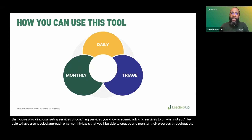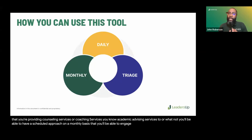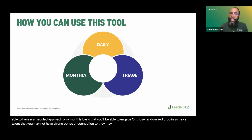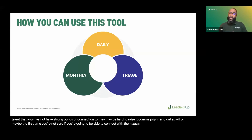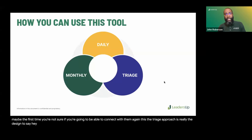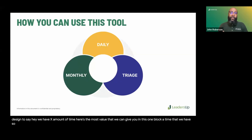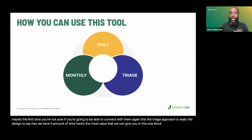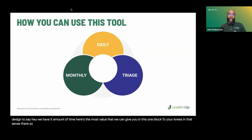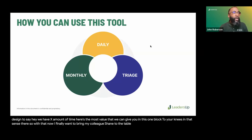You'll be able to have a scheduled approach on a monthly basis to engage and monitor their progress throughout the course of utilizing our tool. And then finally, our triage approach is really designed for those randomized drop-ins — a talent that you may not have strong bonds with, they may be hard to reach, they pop in and out at will. The triage approach is designed to say we have X amount of time, here's the most value we can give you in this one block. So for any of you engaging talent on a randomized basis, the triage approach might be suitable. Now I finally want to bring my colleague Shane to the table to walk us through our PLAY worksheet.